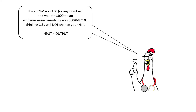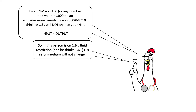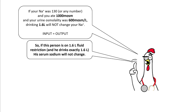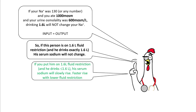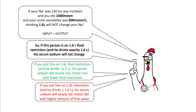If your sodium was 130, you ate 1000 milliosmoles, and your urine osmolality was 600 milliosmoles per litre, drinking 1.6 litres is not going to change your sodium level because total input equals total output. If you put this patient on 1.6 litres fluid restriction and he drinks exactly 1.6 litres, his serum sodium is not going to change. If he drinks less, his serum sodium will slowly rise — the lower the fluid restriction, the faster the rise. If he drinks more than 1.6 litres, his serum sodium will start falling.